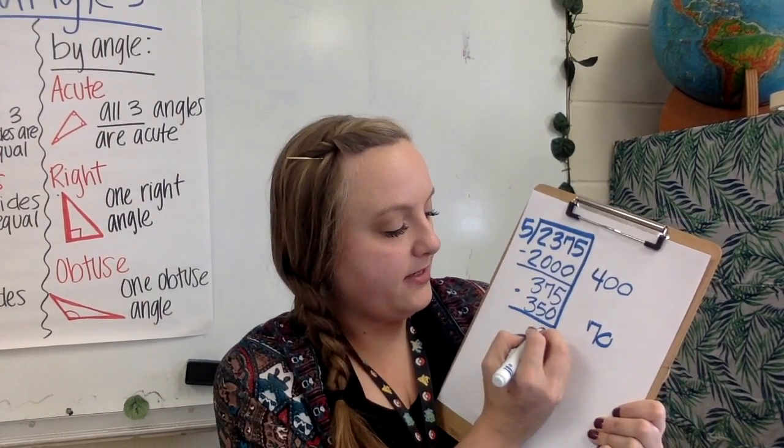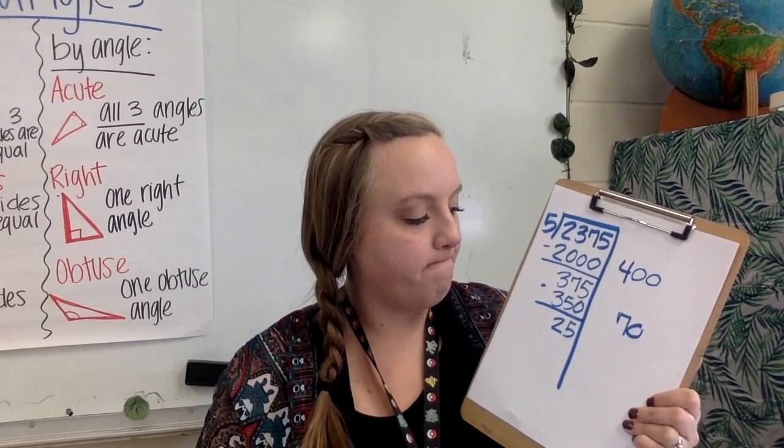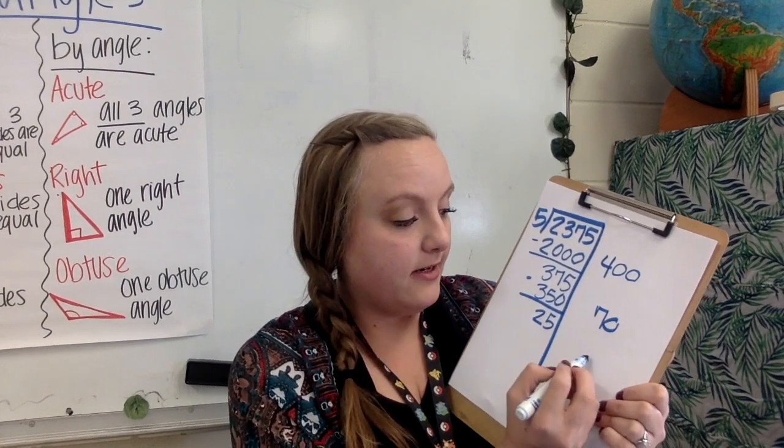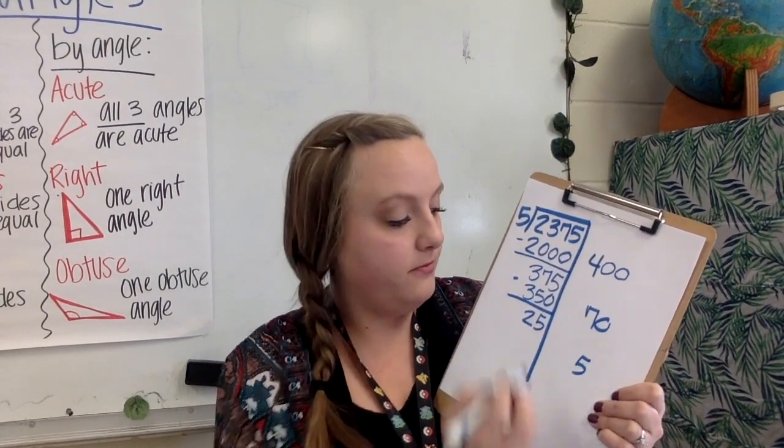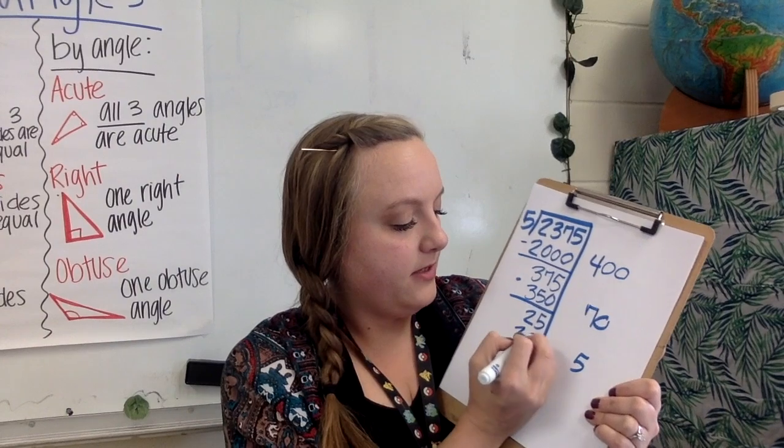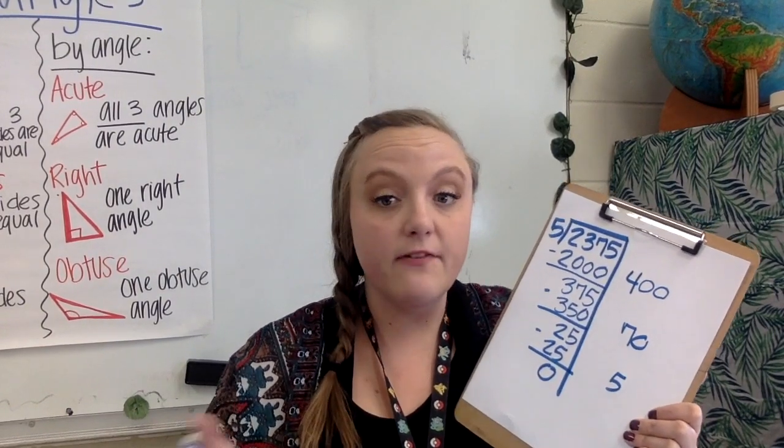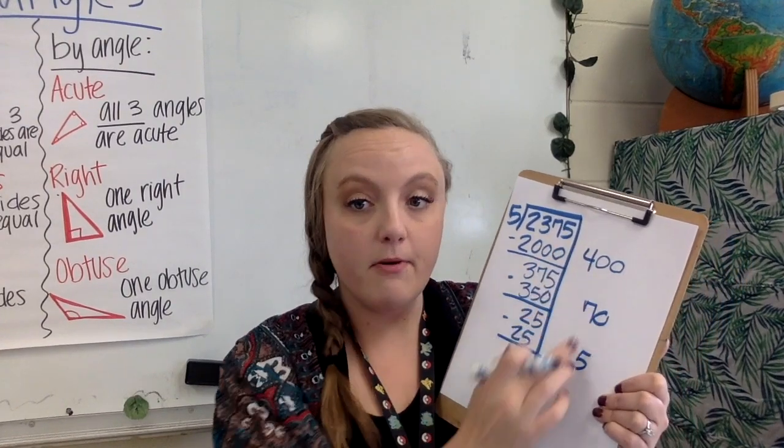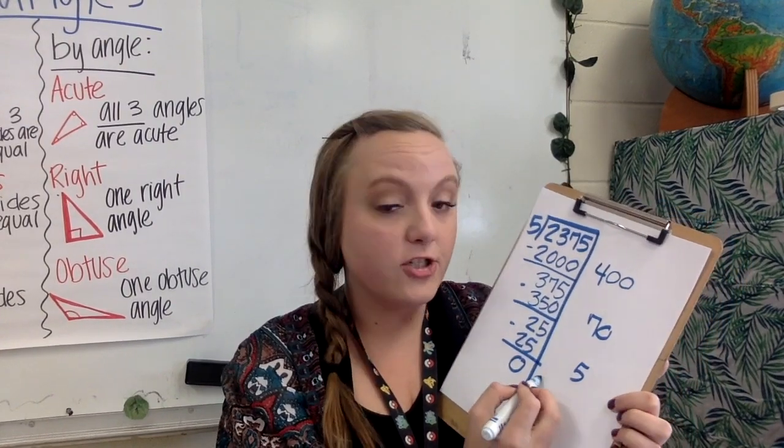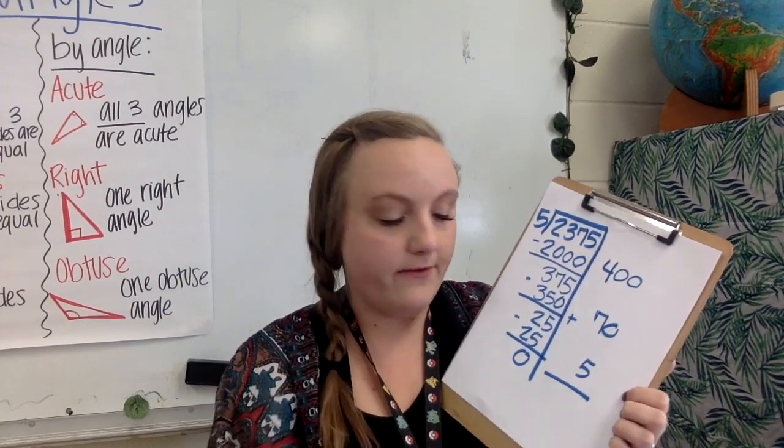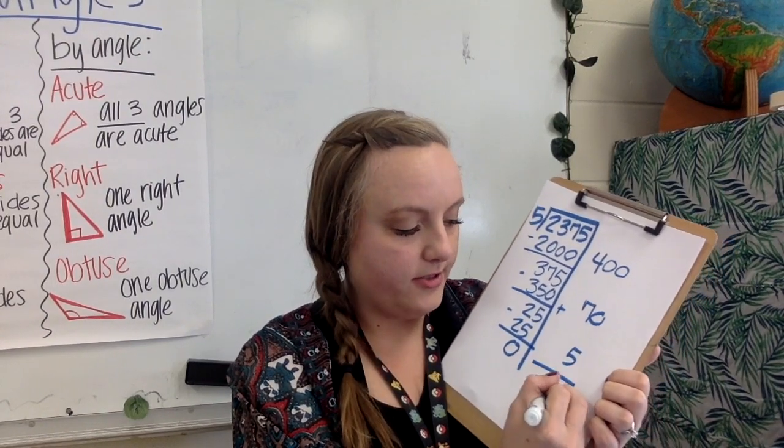So 5 minus 0 is 5. 7 minus 5 is 2. Well, 25 is a multiple of 5 and it is the fifth multiple. 5 times 5 is 25. I subtract. I have 0, so that means I'm done. There's no remainder in this problem. And these are my partial quotients. And to find a total quotient, I just combine them. I add them. 400 plus 70 plus 5 is 475.